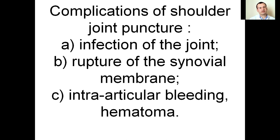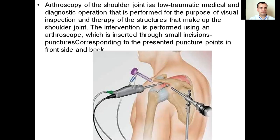Arthroscopy of the shoulder joint is a low-traumatic medical and diagnostic operation performed for the purpose of visual inspection and therapy of the structures making up the shoulder joint. The intervention is performed using an arthroscope inserted through small incisions corresponding to the puncture points in the front, side, and back.